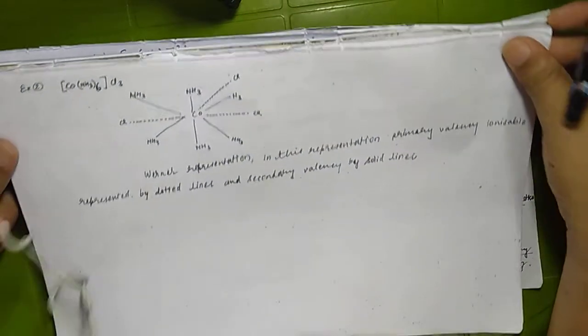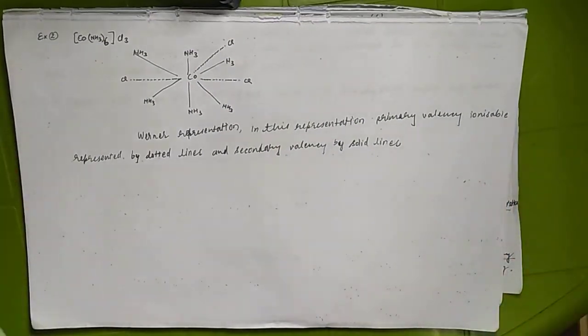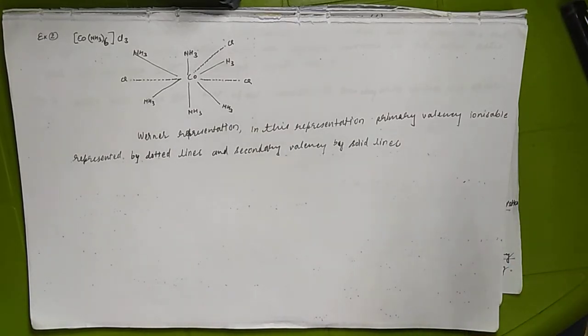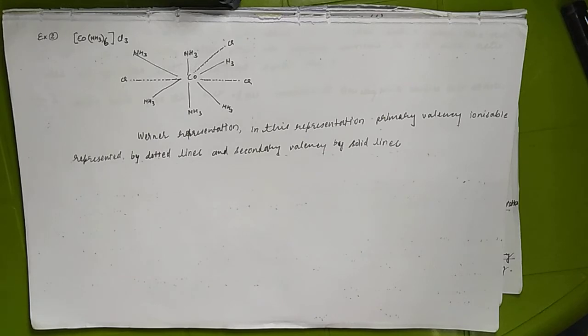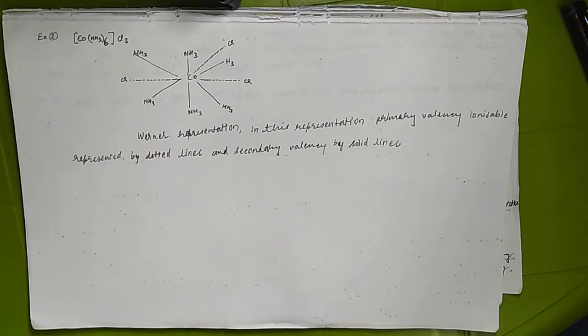Let us look at one more example using Werner theory. According to Werner theory, there are two types of valencies: primary valency and secondary valency. Primary valency is ionizable and satisfied by counter ions. Secondary valency is not ionizable, is satisfied by neutral molecules or ligands, and also determines the spatial arrangement and the coordination number of the complex.